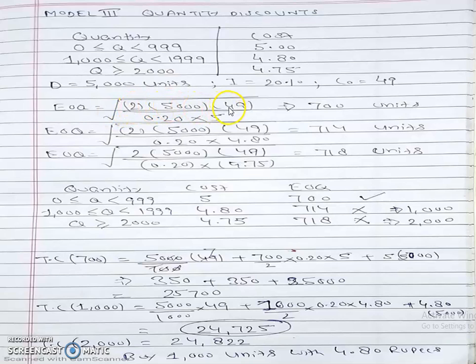Cᴄ is I times C. I is 0.20, unit cost is 5, so we get 700 units. For the second EOQ, 2DC₀ divided by I times Cᴄ, where Cᴄ is 4.80, gives us 714 units.